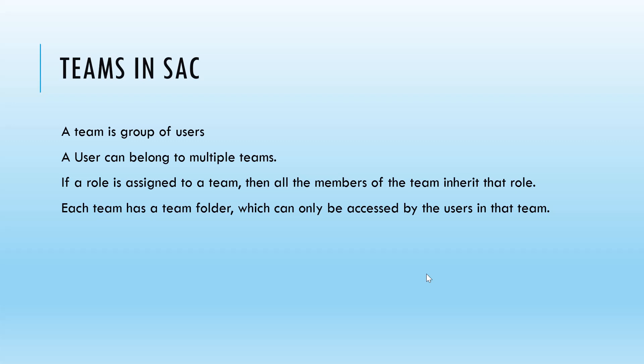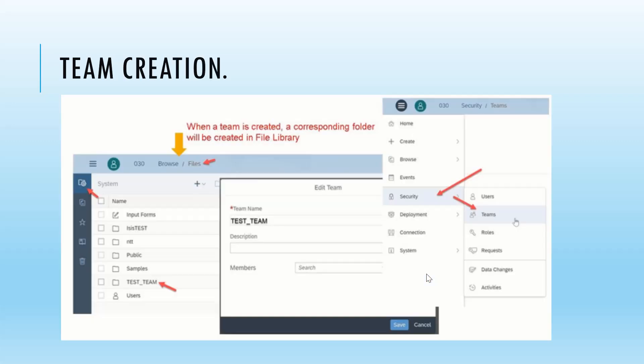The next topic is Teams in SAP Analytics Cloud. A team is a group of users, and a user can belong to multiple teams. If a role is assigned to a team, then all members of the team inherit that role. Each team has a team folder which can only be accessed by users in that team. Teams are very useful — if you have 10 users who need the same kind of access, you can create a team for those 10 users and assign access to that team. All accesses given to the team will be inherited by the users in that team. To create a team, go to Security, then Teams, and once the Teams screen is open, there is an option to create a team. You can then add members by searching for different users.